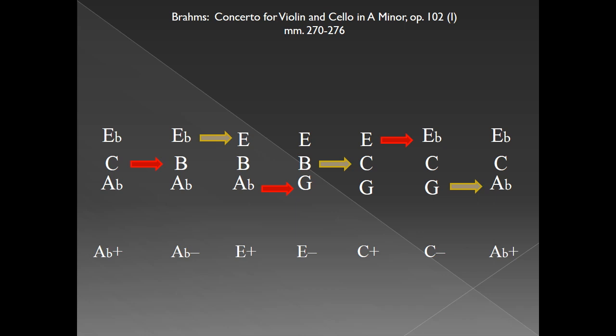I've included conventional triad labels for reference, using plus and minus to indicate major and minor. We can identify two types of transformations here. The first, indicated with red arrows, transforms a major triad into its parallel minor triad. We will refer to this transformation as P for parallel.